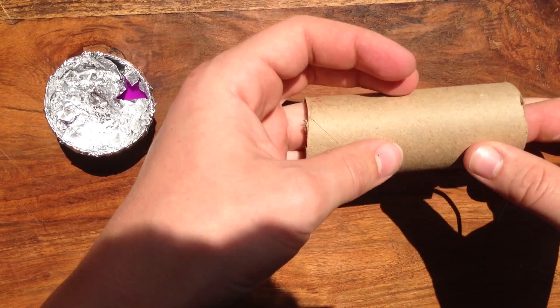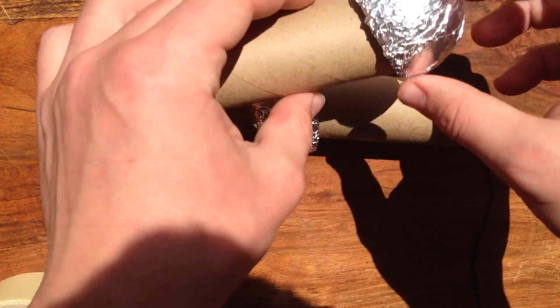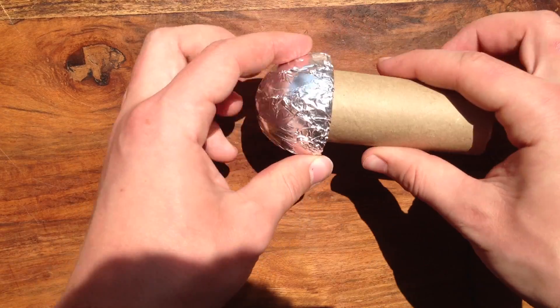Take one of your toilet paper tubes and thread an alligator clip through it. Then connect it to the tinfoil like this, and do this for the second one as well, and secure them both down with some tape.